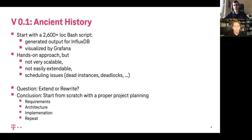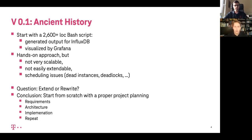About three years ago, we started with a 2,600-line bash script that stored data in InfluxDB and visualized it with Grafana. But that was not very scalable or extendable, and it had a lot of scheduling issues, which is one of the major issues in the whole environment. Think about instances or resources that you created but for some reason did not get cleaned up — deadlocks and so on. This was a major field of concern.